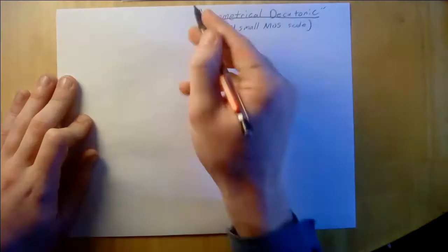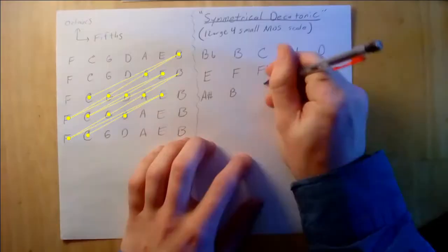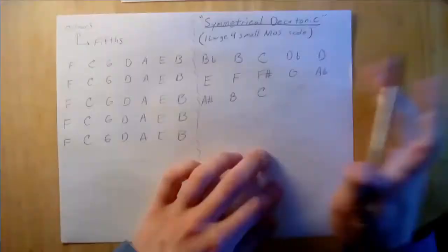Similarly to how we can illustrate western scales as an array of fifths and octaves, we can illustrate Pajara as an array of half-octaves and semitones, though our western note names lose their meaning in this context, and what's important instead is each note's location in the 2D array.